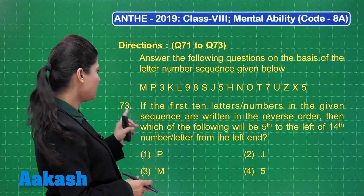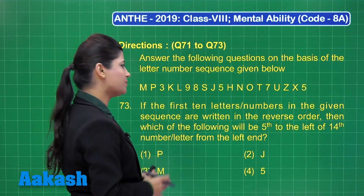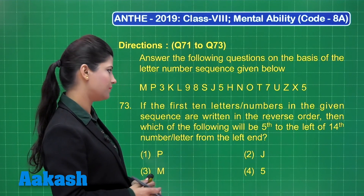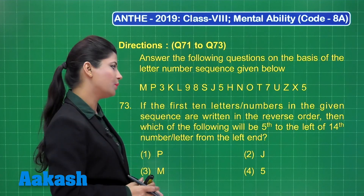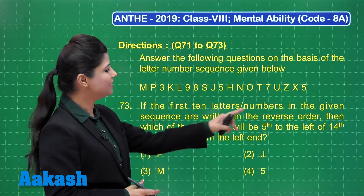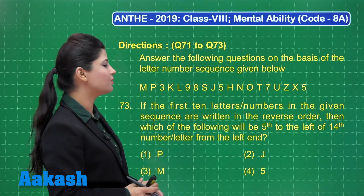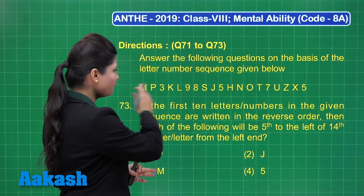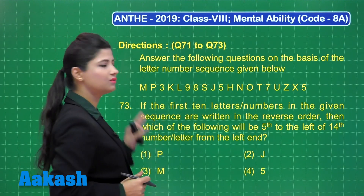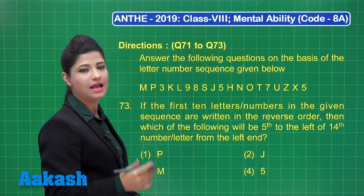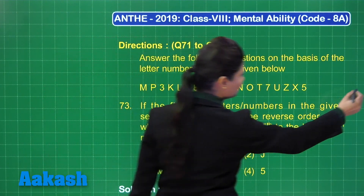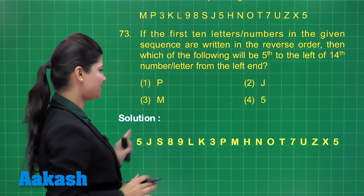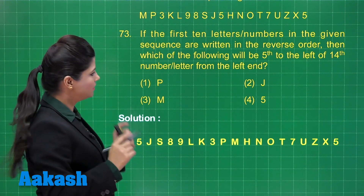Now let's proceed to question number 73. It states: if the first 10 letters or numbers in the given sequence are written in reverse order, then which of the following will be fifth to the left of the fourteenth number or letter from the left end? First, you need to consider the first 10 letters from the left end, reverse them, and you get this new sequence here.